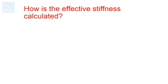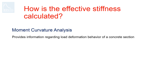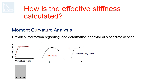Before trying to answer that question, let's see how effective stiffness is calculated. We go back to the basics of section analysis — in particular, moment-curvature analysis. It is a method to determine the load-deformation behavior of a concrete section using non-linear material stress-strain relationships.